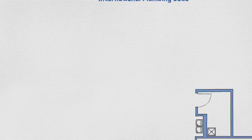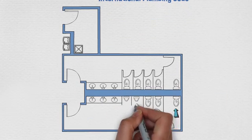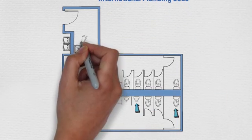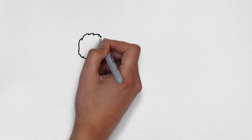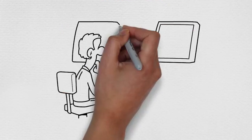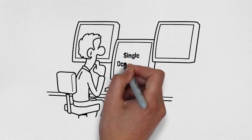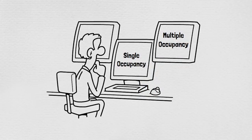We are referring to water closets, urinals, sinks, janitor sinks, drinking fountains, etc. We will look at examples of single occupancy groups and multiple occupancy group scenarios.